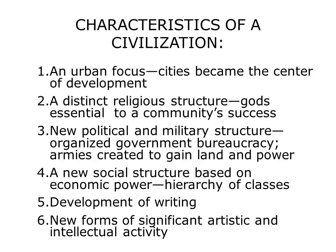Number three: a new political and military structure. We are beginning to see the development of a government bureaucracy, and armies were created to first protect and then eventually to gain more land and power. Number four: a new social structure based on economic power — specifically a hierarchy of classes. You start to see the rich, the middle class, and the poor. Number five: the development of writing, which came about when trade was growing in importance and you had to keep track of what you were trading.